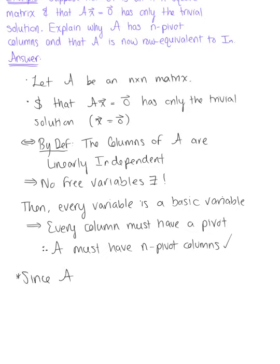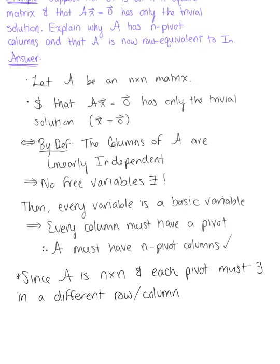Since A is an n by n matrix and each pivot must exist in a different row and a different column, this implies that the pivots must exist along the main diagonal. Therefore, our matrix A is equivalent to the n by n identity matrix.